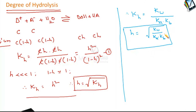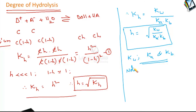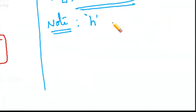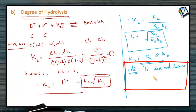By knowing KW, KA, and KB, it is possible to calculate H, the degree of hydrolysis. An important observation: in this relation there is no concentration of salt term at all. Therefore, the degree of hydrolysis of a salt of weak acid and weak base does not depend on the concentration of the salt. Note: the degree of hydrolysis H for the salt formed from weak acid and weak base does not depend on the concentration of the salt.